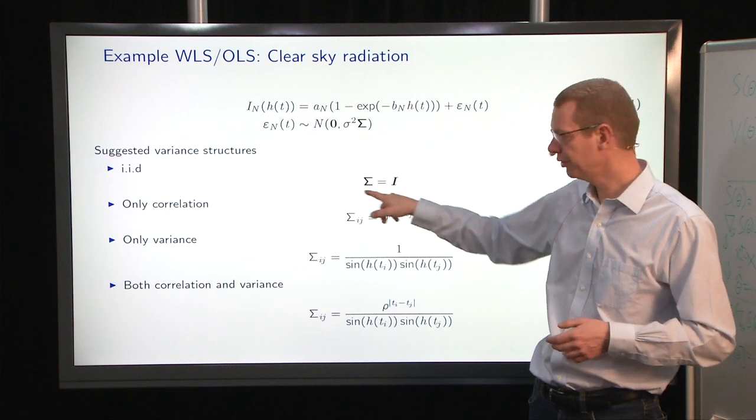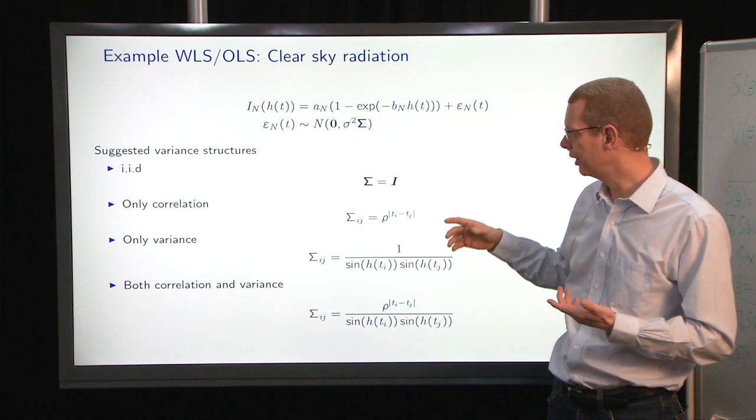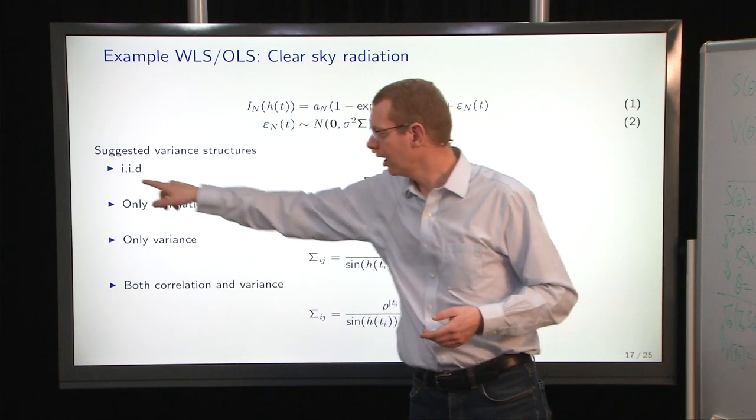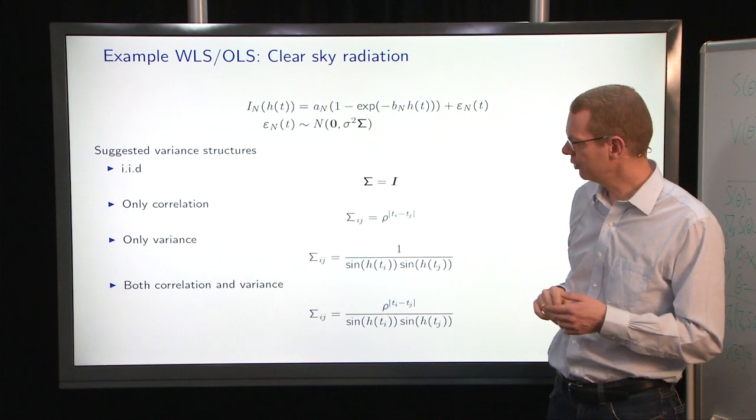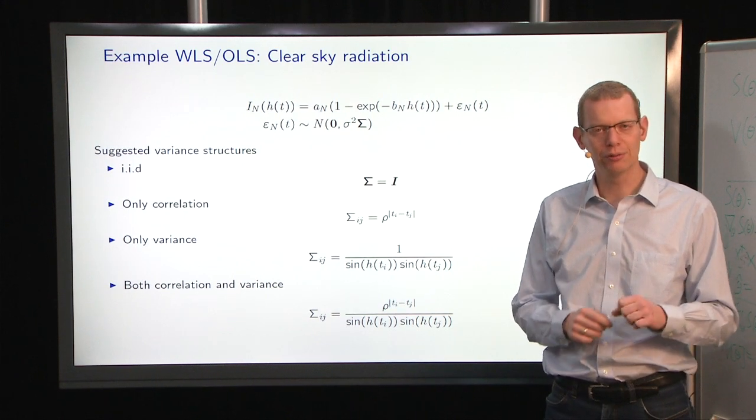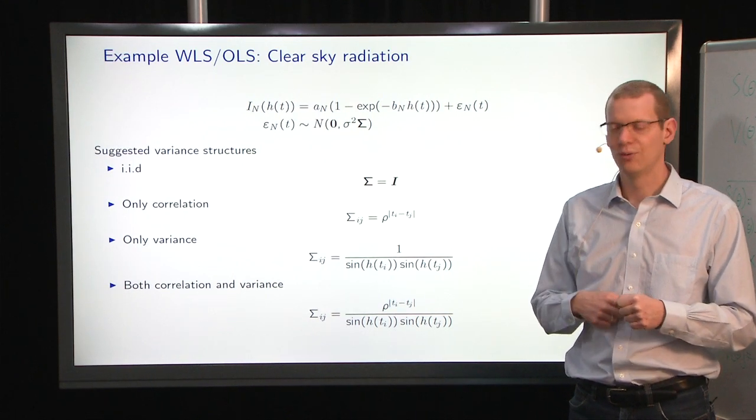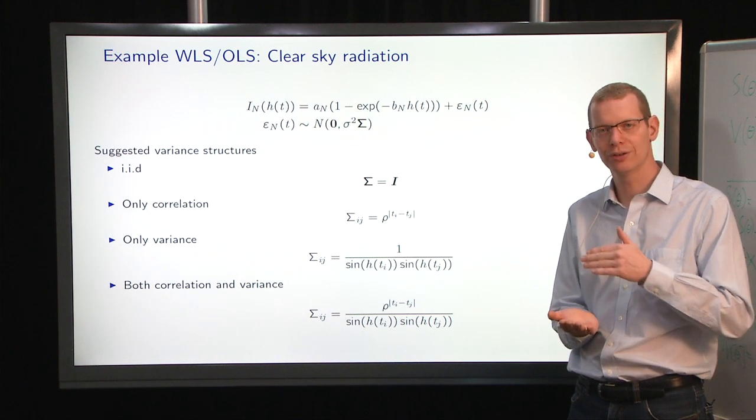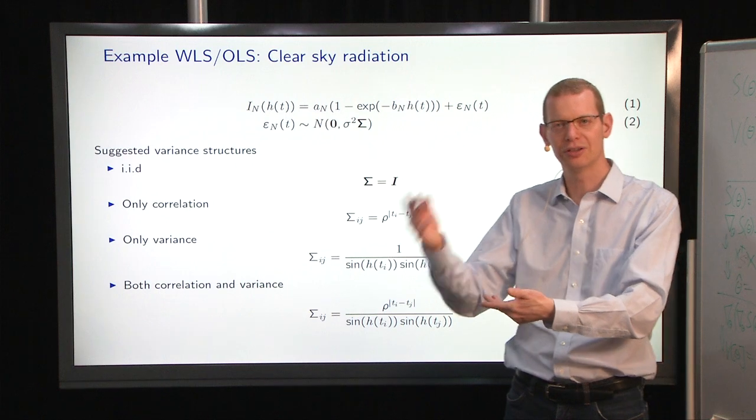We start with just using the identity matrix, the IID, which gives you independent, identically distributed variables. But what we saw was also there was a correlation. So there's a correlation so that if you get a negative error at some point, you also expect the same thing in the next observation and the next and next.